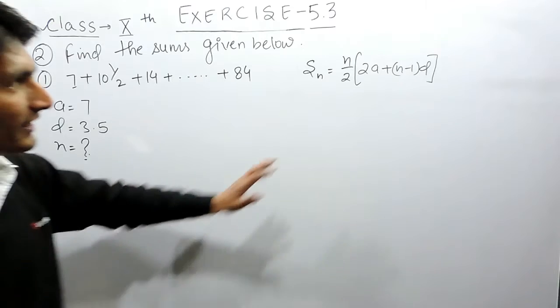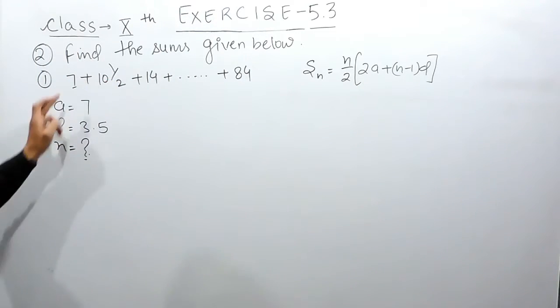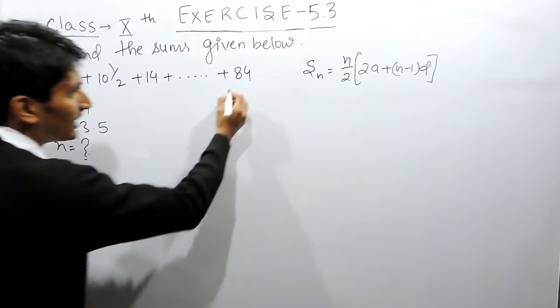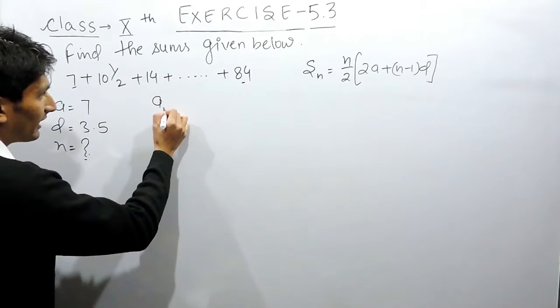So here the common difference is 3.5, but the number of terms in this AP is not known to me. So I cannot find the sum here. So first of all, what I have to do is find the number of terms in this AP. For that, we have a formula.